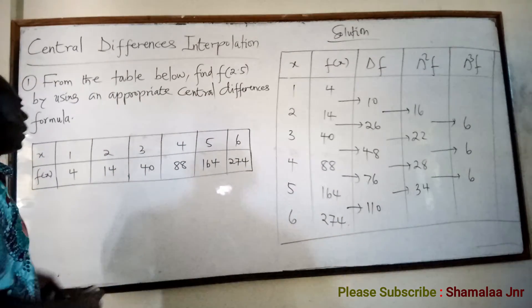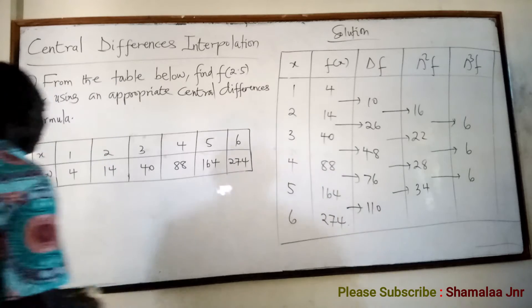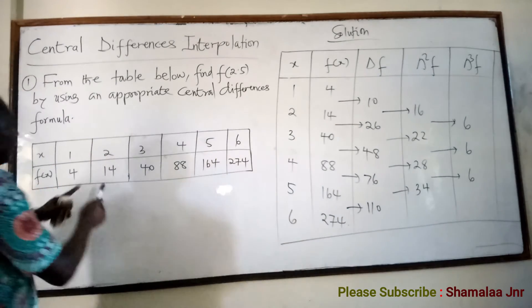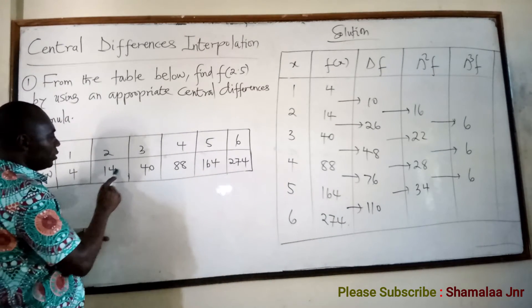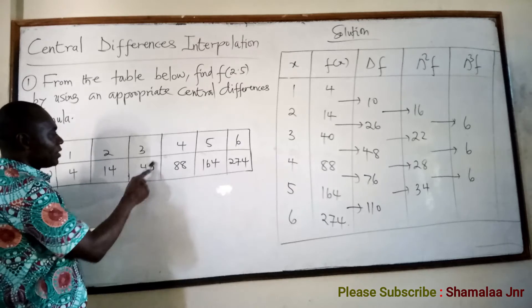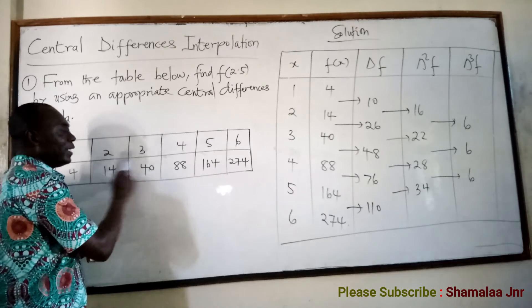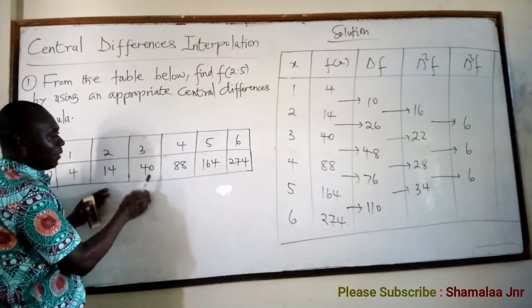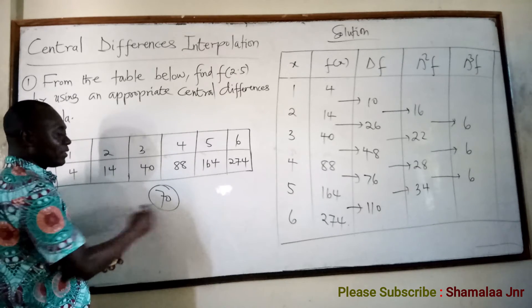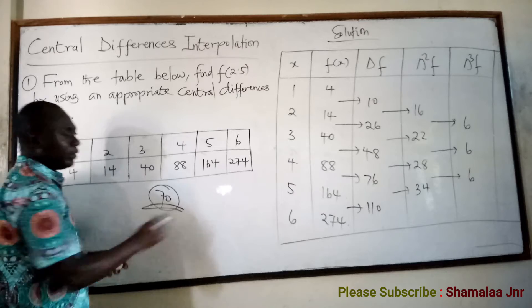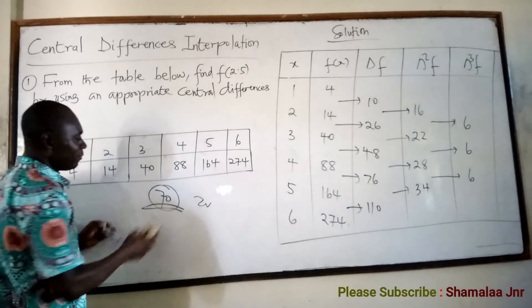You have been asked to find the functional value of 2.5. Straight away, you have to know that your answer should be greater than 14 but less than 40, because 2.5 lies between 2 and 3. So if you get, say, 70 or 200, then you know there is something wrong with what you have done.